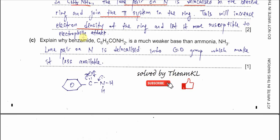Part C: Explain why benzamide is a much weaker base than ammonia. Benzamide contains an amide bond with a C=O and N-H. Even though there is a nitrogen, the lone pair on nitrogen is not available because the oxygen in the amide is electron withdrawing. The lone pair on nitrogen delocalizes into the C=O group, making it less available and therefore much less basic.